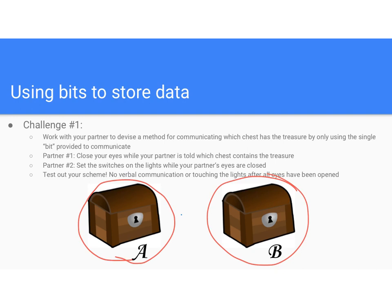If the LED light was off, you would say the treasure was in chest A. If it was switched to on, that would mean the treasure was in chest B. When the other person opened their eyes, they could see the state of the LED and know where the treasure was. The idea is that we can use bits to communicate information — an LED switched off or on can represent a zero or a one, or if agreed upon ahead of time, treasure chest A or chest B.